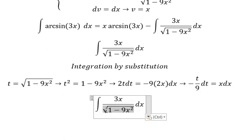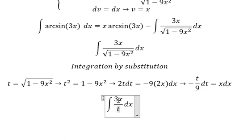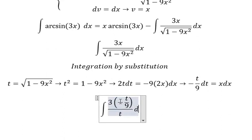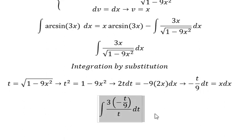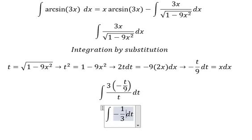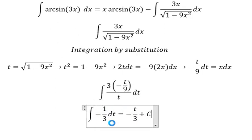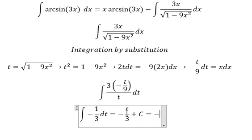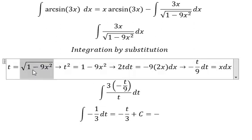The square root term is t, and x dx we can replace by this substitution. Now we simplify: 3 divided by 9 gives us negative 1 over 3, and we integrate dt. This gives us negative t over 3 plus C.